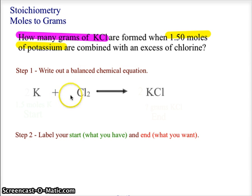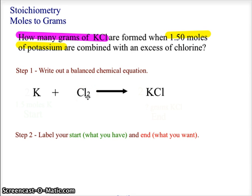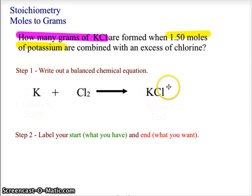We are told that potassium is combining with chlorine to produce potassium chloride. The chlorine has to be Cl2 because it is diatomic in its gas form. For the balanced equation, we have two Cls on the reactant side and need two Cls on the product side, so we put a 2 in front of the potassium chloride, KCl.